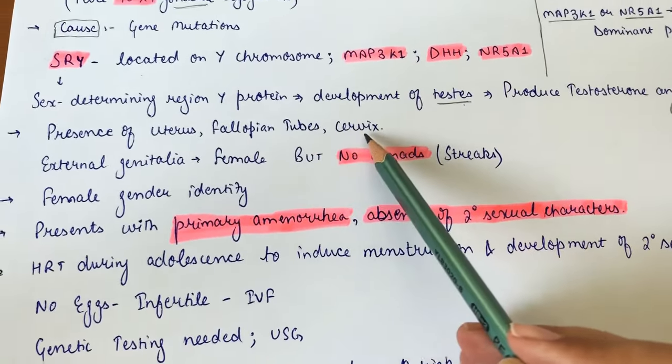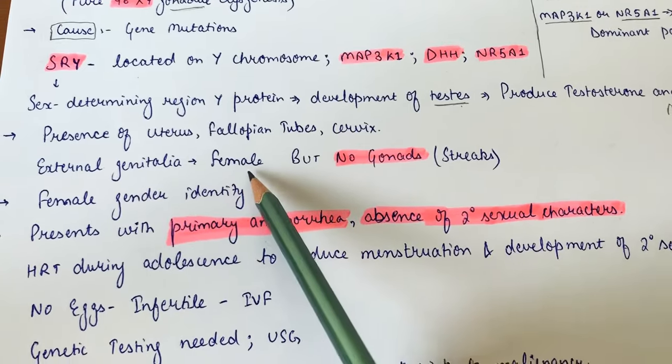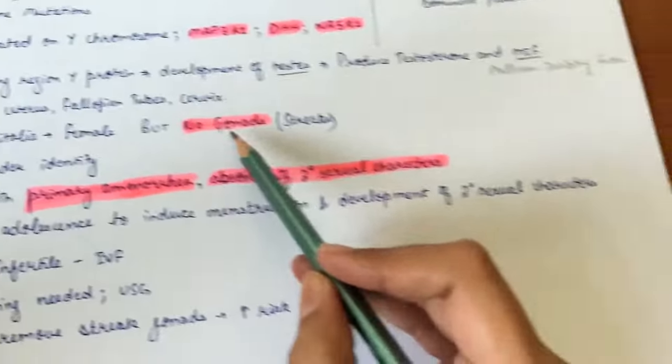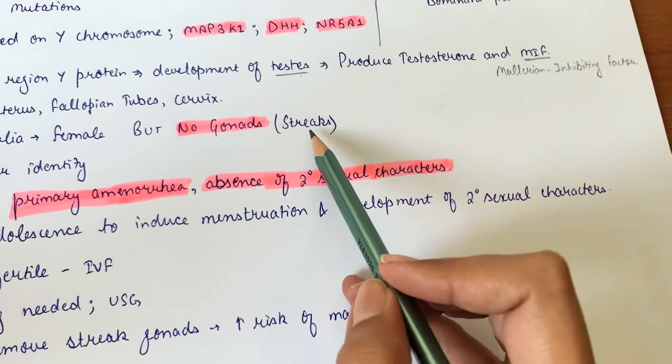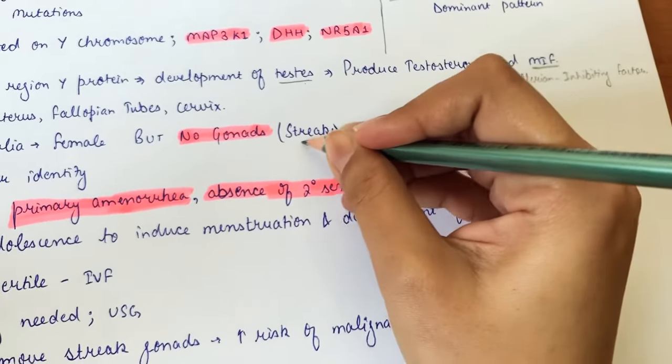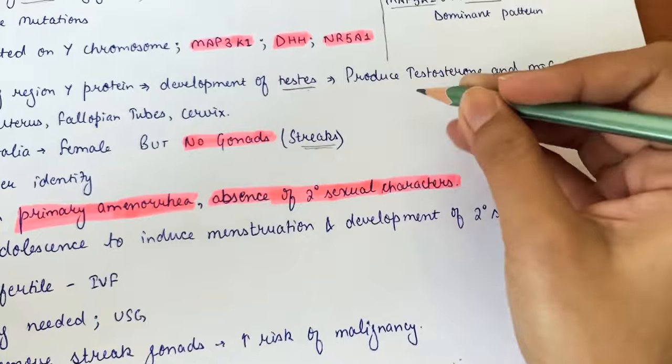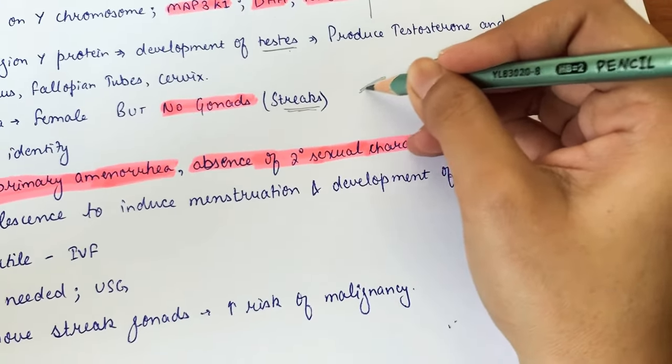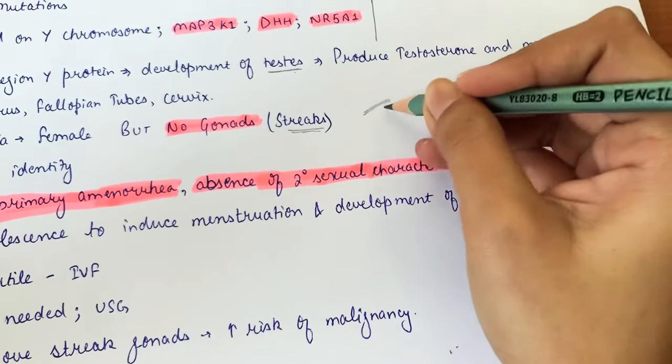In these patients, there is a uterus, fallopian tubes, and cervix. The external genitalia are also female. However, there are no functioning gonads. Instead, streak gonads are present—simply bands of functionless fibrous tissue in the place of normal gonads.